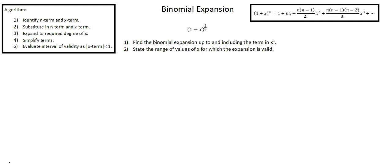I've copied the binomial expansion general term up into the upper right corner of the screen, and we have our algorithm for binomial expansion in the upper left corner. Let's begin with Step 1: Identify n term and x term. The n term is our exponent, 1/3. The x term is -x, which I'll expand to -1 times x.